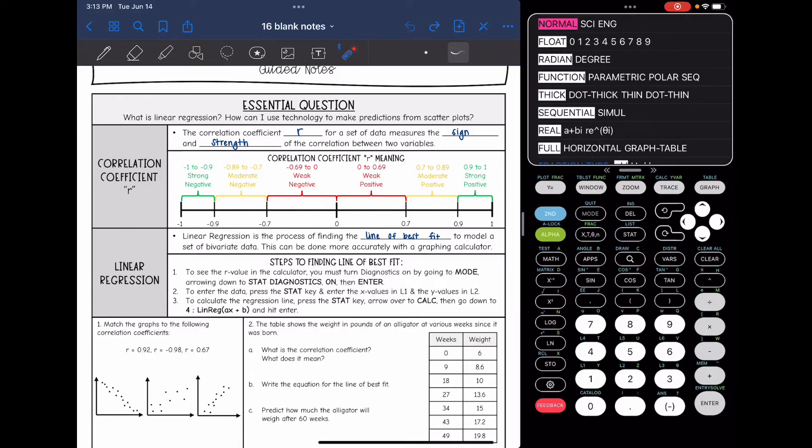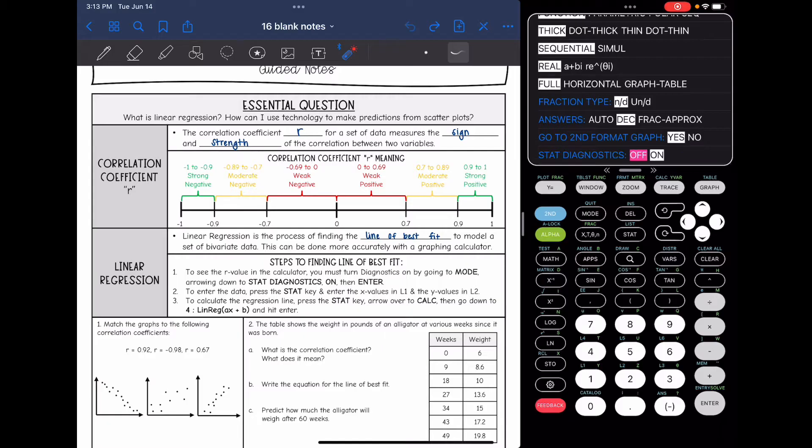The mode key is right there to the right of the second key, and then I'm going to go down to stat diagnostics. If you're on an actual TI, this might look a little bit different than mine. I'm going to make sure that it's on. I'm going to hover over to on and hit enter. Okay, so it's on.